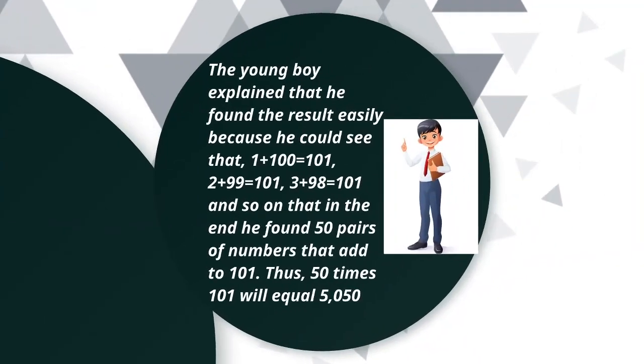The young boy explained that he found the result easily because he could see that 1 plus 100 equaled 101. So did 2 plus 99. Also, 3 plus 98. And so on that he found 50 pairs of numbers that add to 101. Thus, 50 times 101 will equal to 5050.